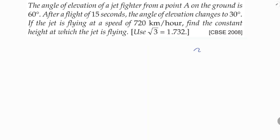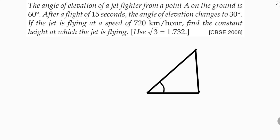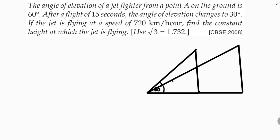The angle of elevation of a jet fighter from a point is 60 degrees — this angle is 60 degrees. After a flight of 15 seconds at a constant height, the angle of elevation changes to 30 degrees — this angle is 30 degrees. From position A to B, it took 15 seconds. I'll name the points P, C, D. So it took 15 seconds to travel from A to B.